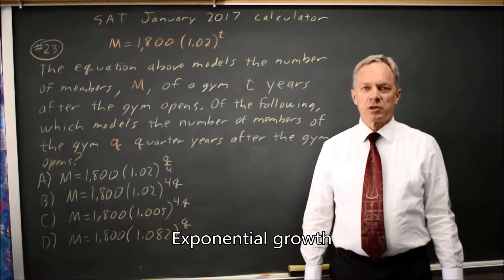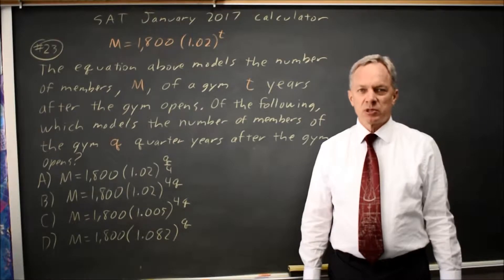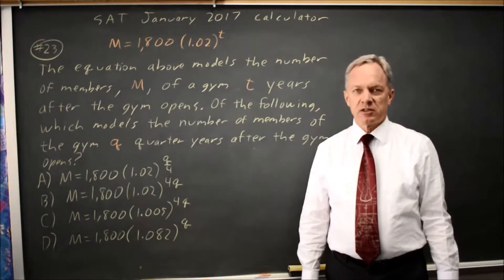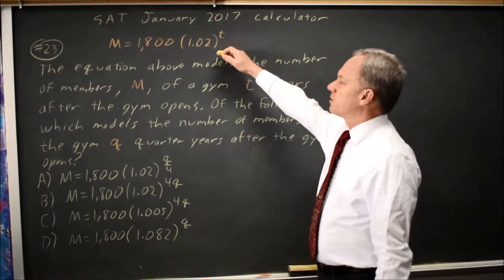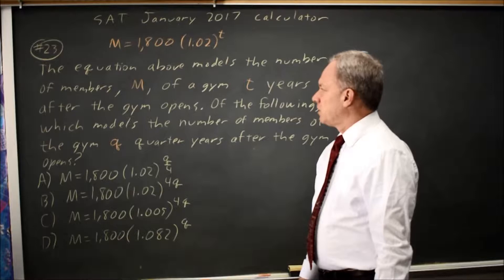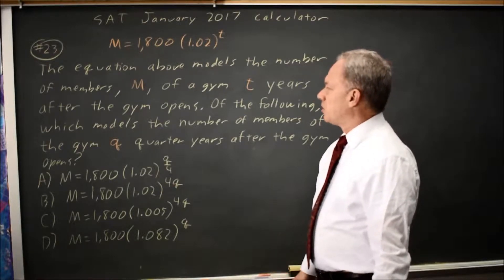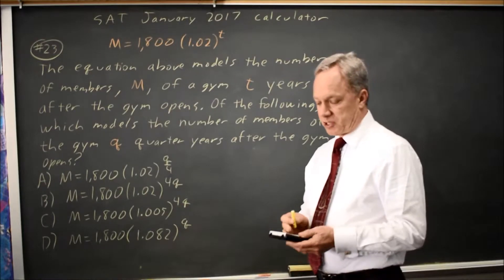This is calculator question number 23 from the January 2017 SAT, which is also practice test 8 from the 2018 College Board Prep Book. We're given an equation for exponential growth modeling the number of members of a gym t years after the gym opens, and they want to know which one models the number of members t quarters after the gym opens.